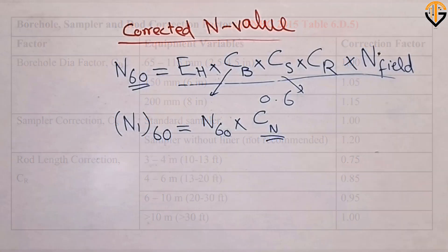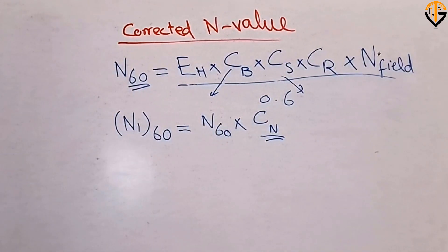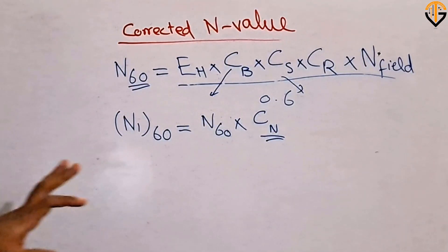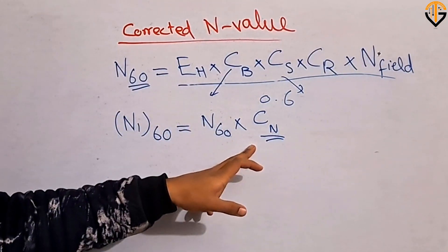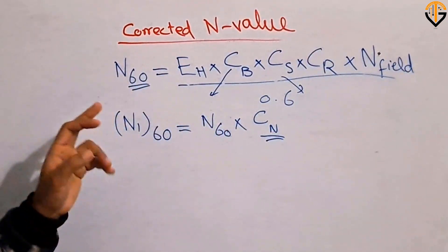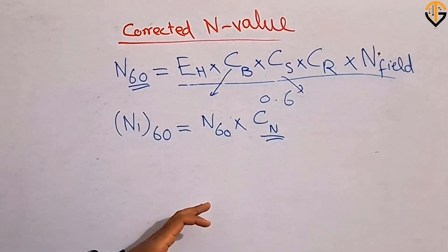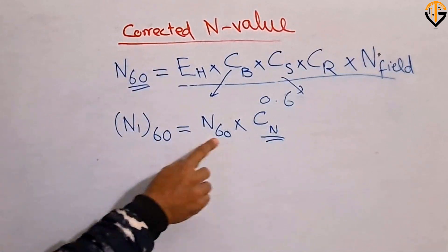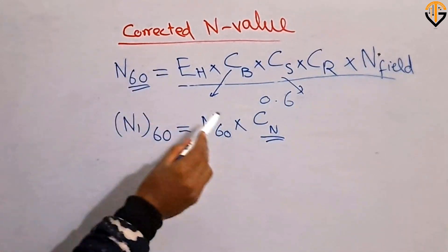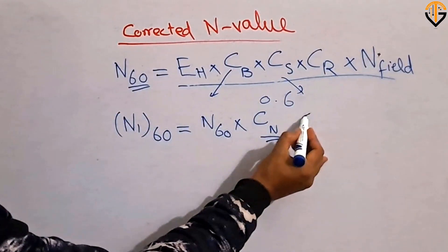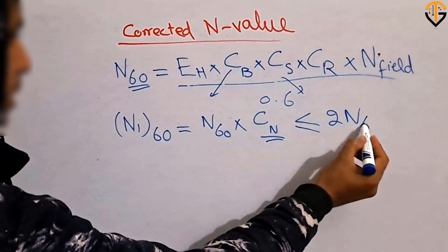Regarding the overburden correction: if the soil type is cohesive, there is no need to apply the overburden correction. But if the soil type is coarse, you need to apply the overburden correction. Once you find out N₆₀, you multiply it by C_N, and remember the result should be less than 2N₆₀.